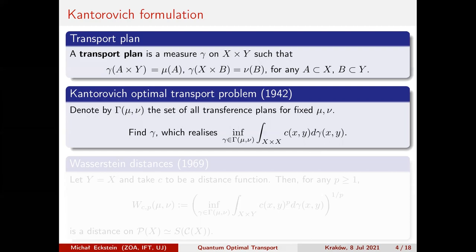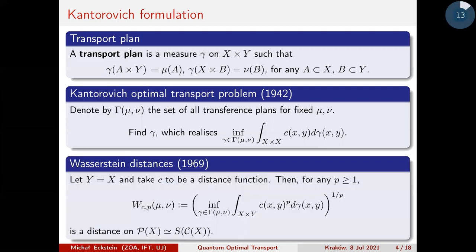Suppose X equals Y — the same space — and the cost function is just a distance function. Mathematically, I understand this Kantorovich formulation: I have a global probability distribution, I have marginals that agree, and it's some kind of refinement on the marginal problem.